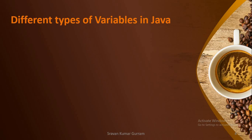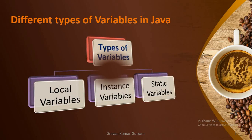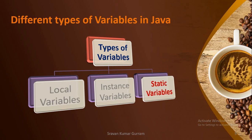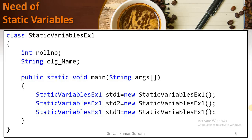We started our discussion about the different types of variables in Java. In our last two videos, we discussed local variables and instance variables. In this video, we are going to discuss the third category of variables: static variables. Let us first understand what is the need of static variables.